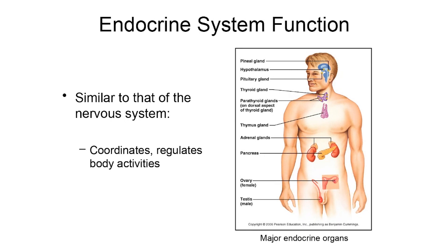The first thing that I would say about the endocrine system is its function — what it actually does in the body — is very similar to that of the nervous system in that it coordinates and regulates all body activities. The nervous system can have really rapid effects because all it has to do is send an electrical signal that travels at the speed of light down a neuron and release a neurotransmitter onto an organ to cause its effects.